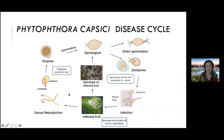I want to briefly touch on the disease cycle to emphasize how important spores are for disease control. This pathogen produces lemon-shaped structures called sporangia that under the microscope look like little crystals. When those get exposed to water, they differentiate into 60 swimming zoospores. So water literally makes this disease 60 times worse — water is really, really important.